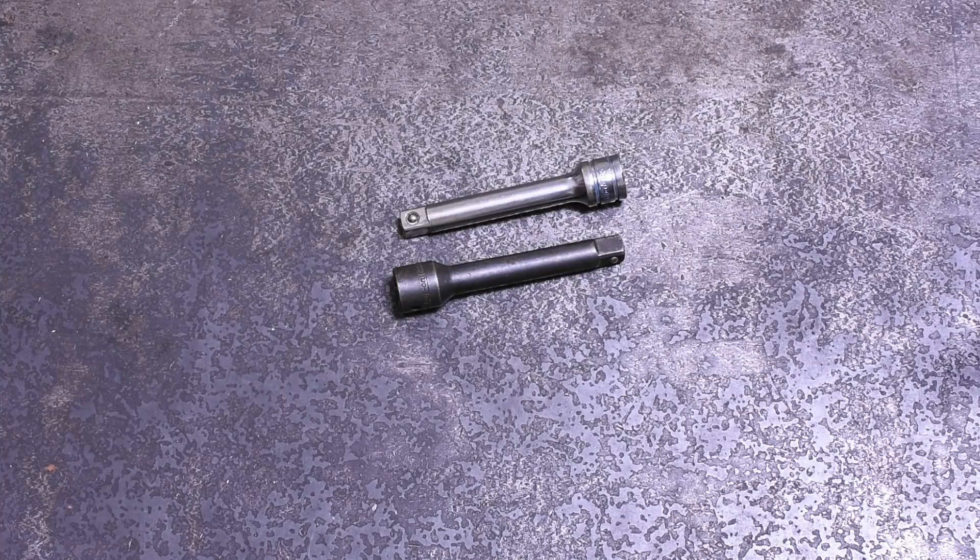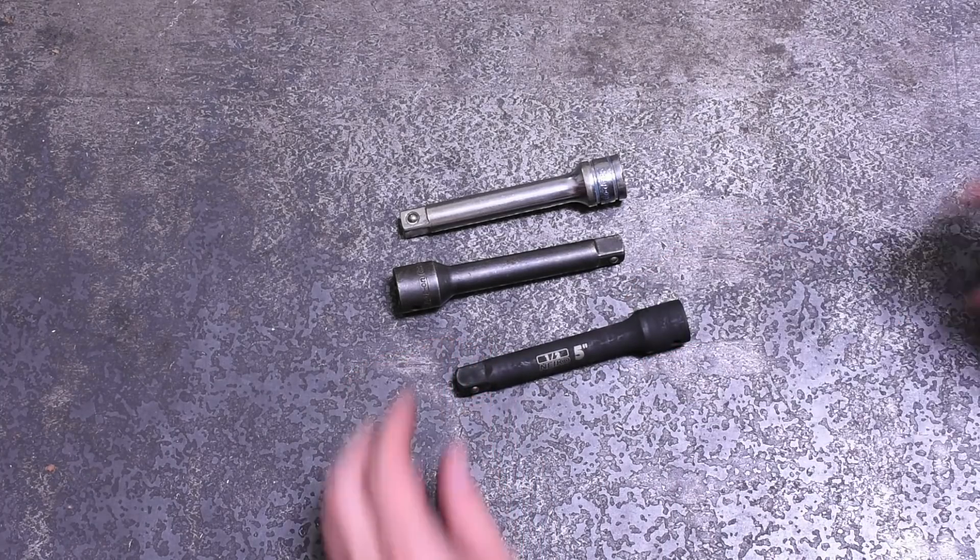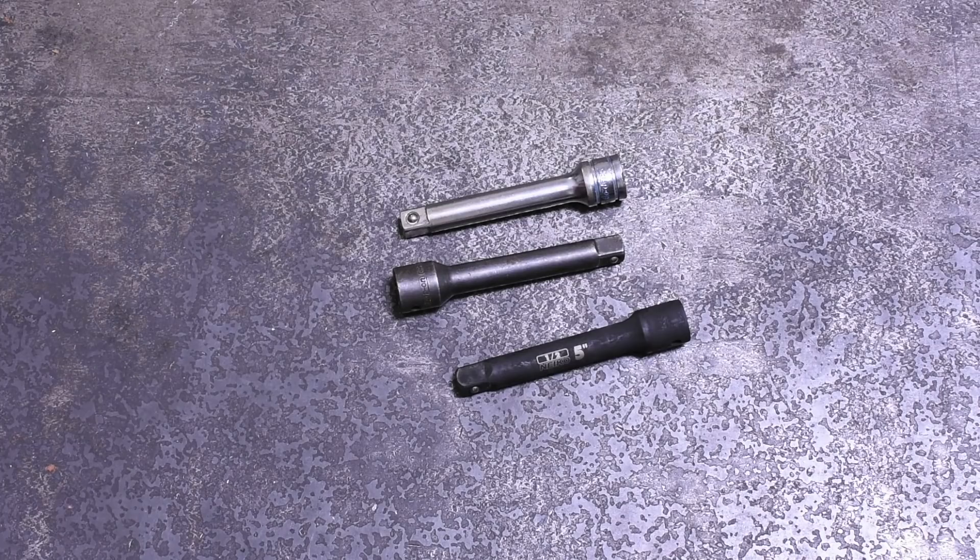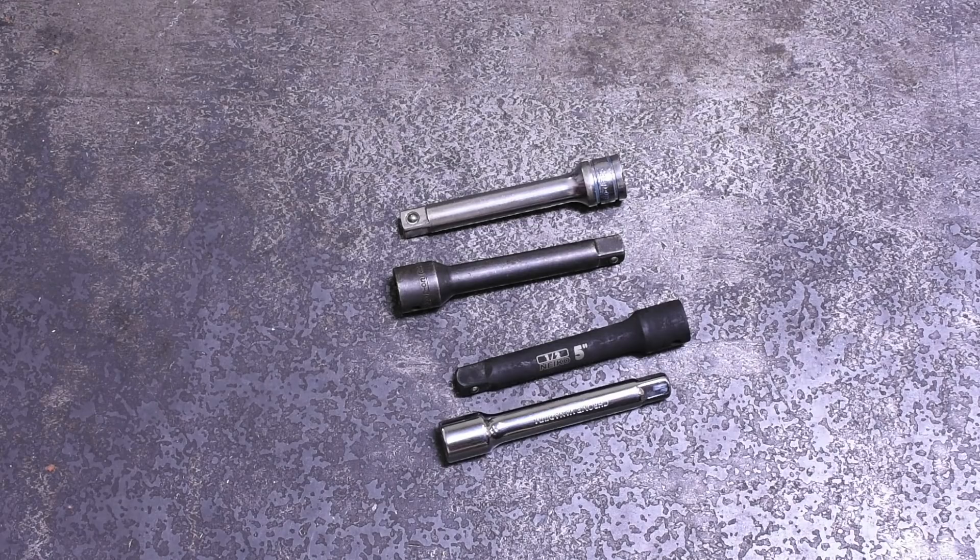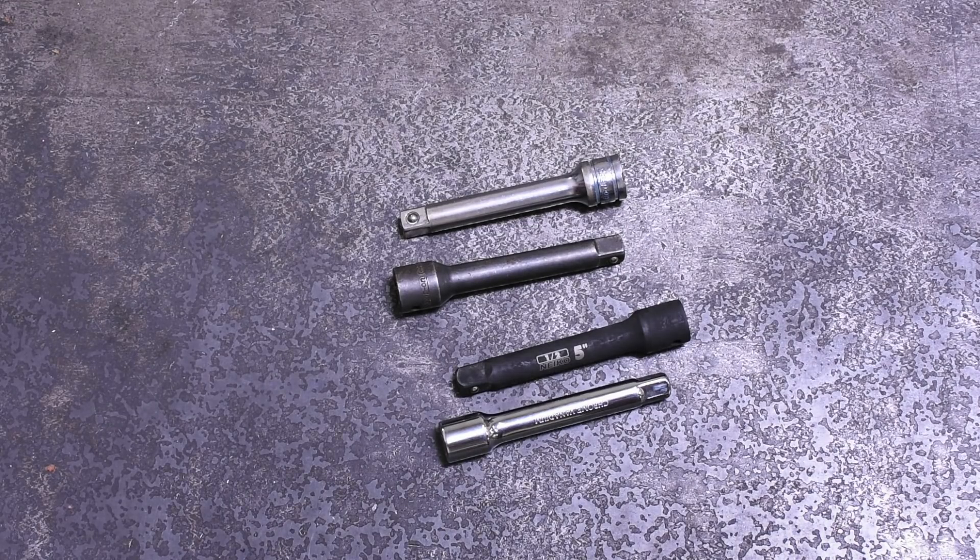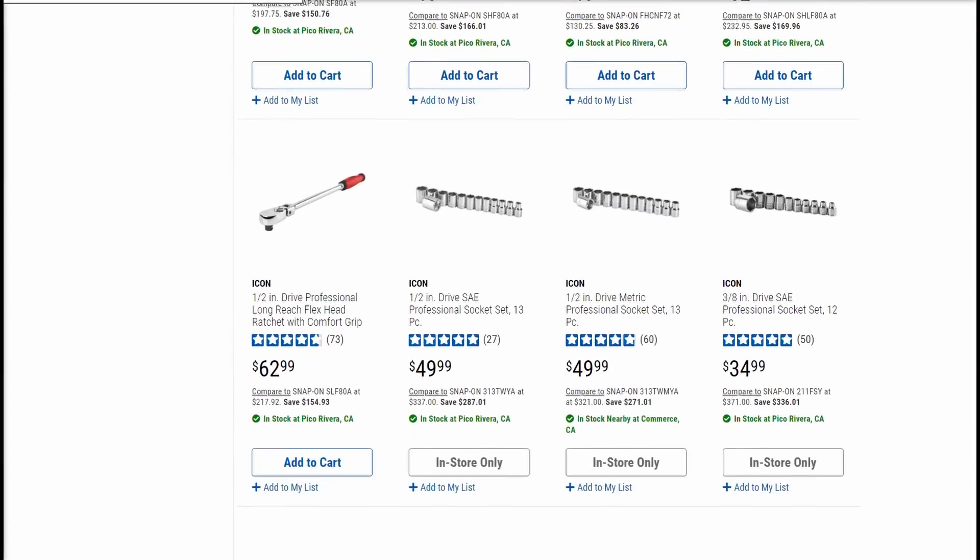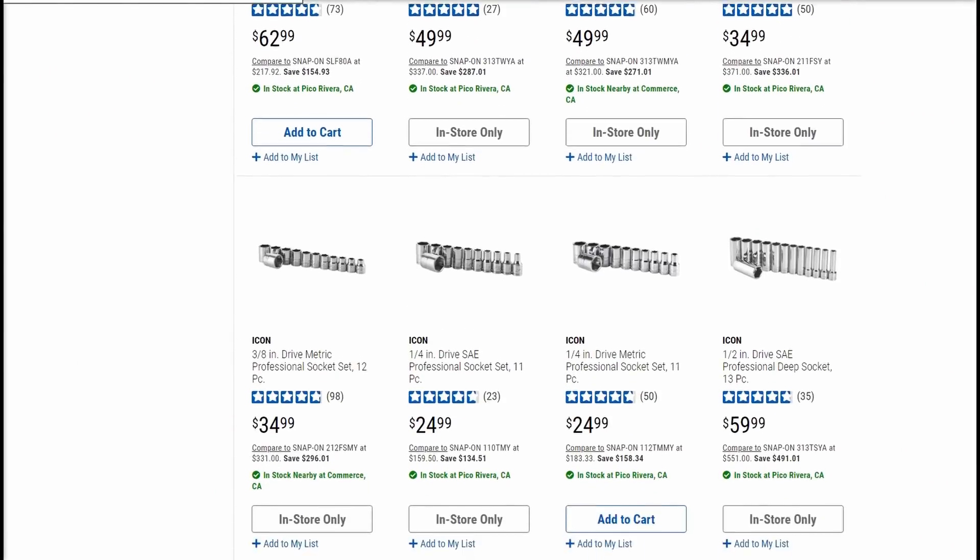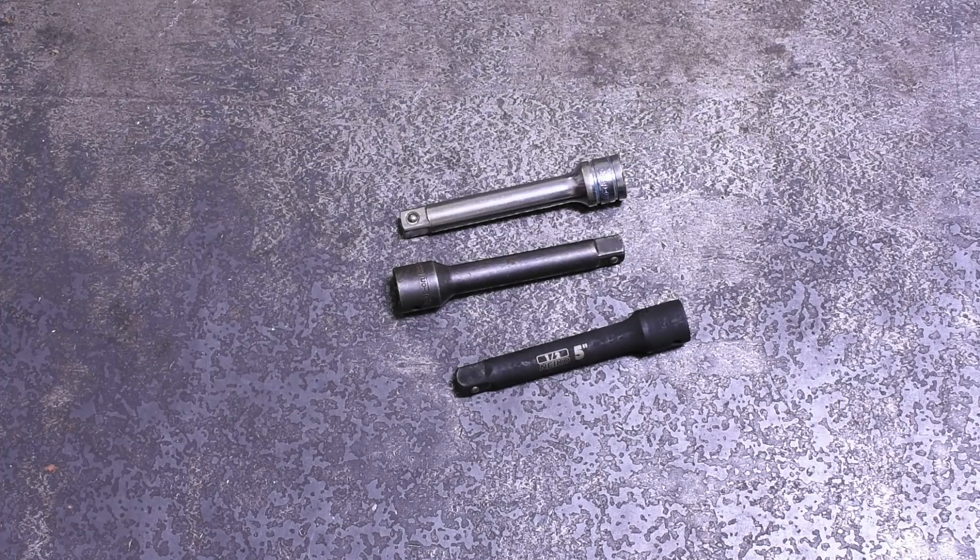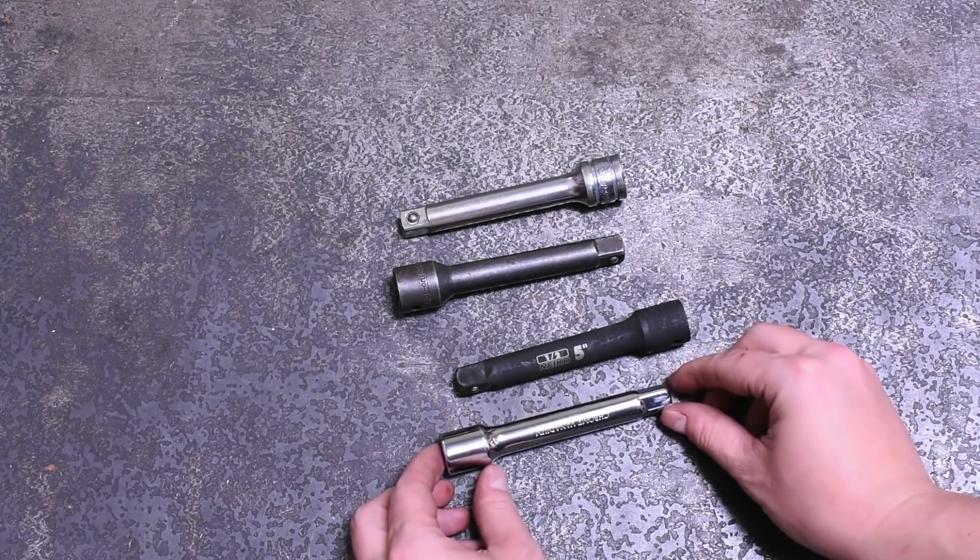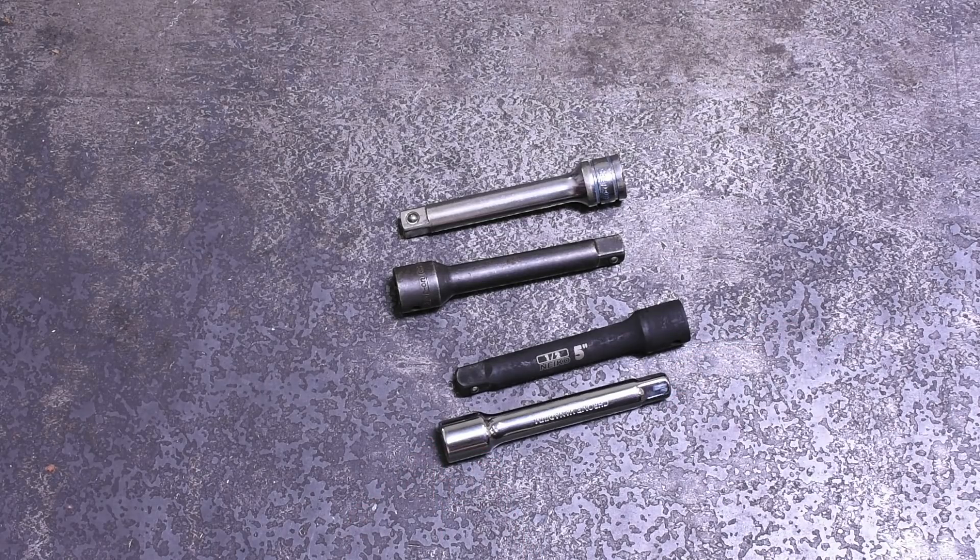Then we got our five inch Neko impact extension from that extensions episode. Then we have an old but mostly unused chrome five inch extension from Harbor Freight. I bought this one quite some years back for home use long before Harbor Freight went sort of up market with their icon line. So if there is a difference, at least when it comes to power delivery between extensions, this should be a pretty wide range between options to showcase that.